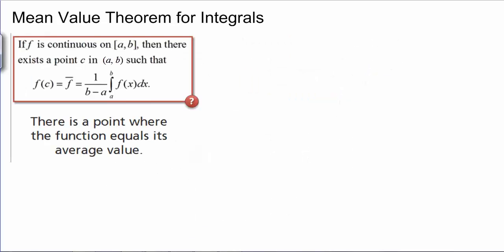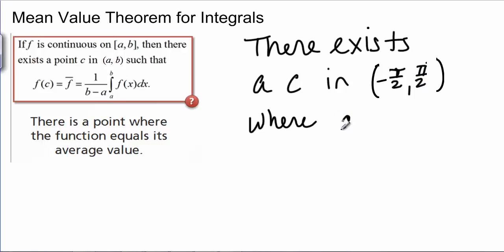Lastly, the mean value theorem for integrals. This says that a function will obtain its average value on an interval. So this means that there exists a c in negative pi over 2, pi over 2, where cosine of c is equal to 2 over pi.